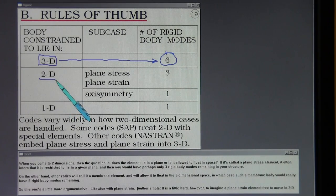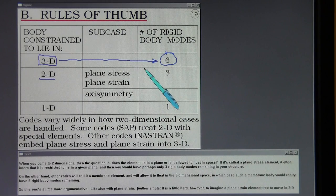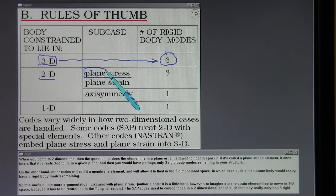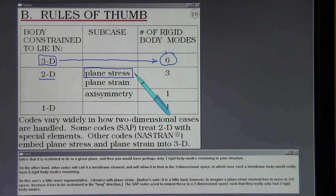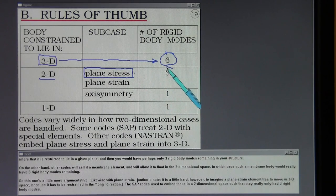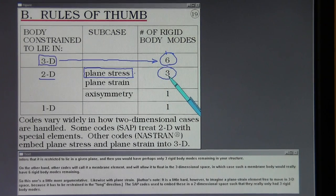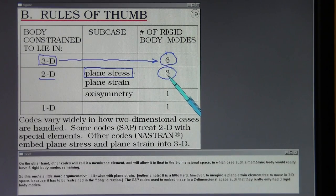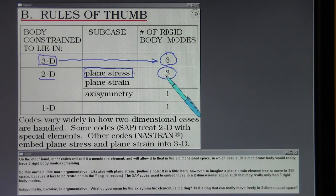When you come to two dimensions, then the question is, does the element lie in a plane or is it allowed to float in space? If it's called a plane stress element, it often infers that it is restricted to lie in a given plane and then you would have perhaps only three rigid body modes remaining in your structure. On the other hand, other codes will call it a membrane element and will allow it to float in the three-dimensional space in which case such a membrane body would really have six rigid body modes remaining.